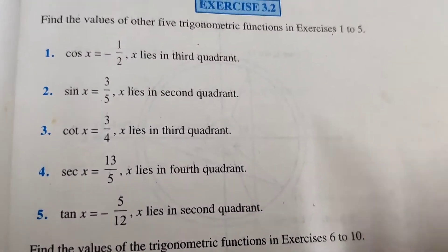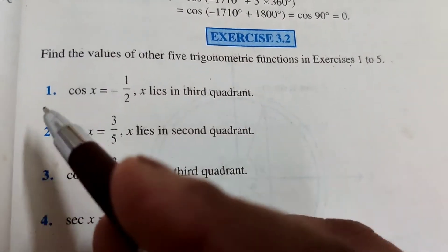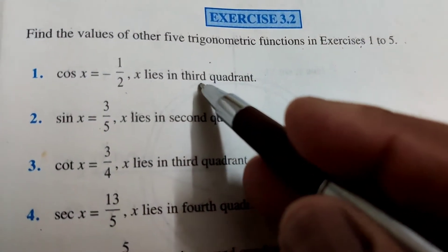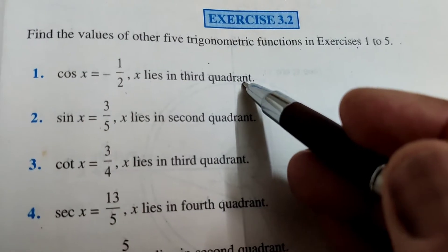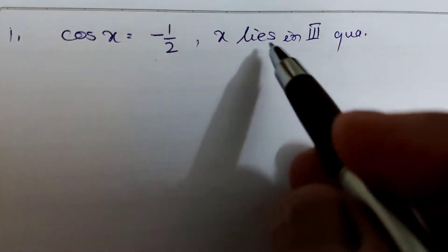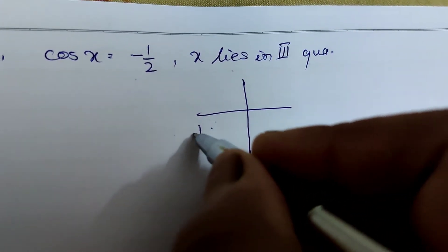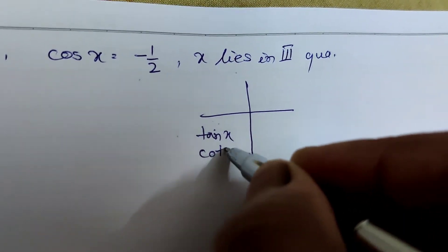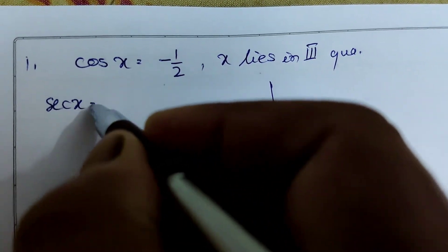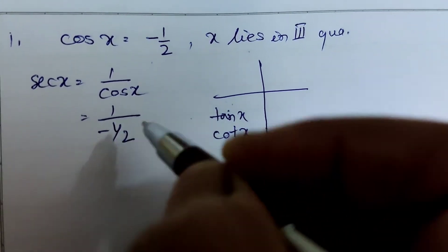Now solving Exercise 3.2 — find the values of the other 5 trigonometric functions. Question 1: cos x = -1/2, x lies in the third quadrant. In the third quadrant, tan and cot are positive and all other ratios are negative. Since cos x = -1/2, sec x = 1/cos x = 1/(-1/2) = -2.